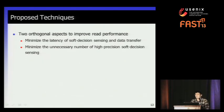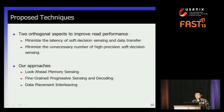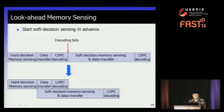There are two aspects to reduce read latency. The first is to minimize the latency of soft decision sensing and data transfer. The second is to minimize the unnecessary number of sensings in high-precision soft decision sensing. We propose three techniques based on these two aspects: look-ahead sensing, progressive sensing and decoding, and data interleaving. I will introduce them one by one.